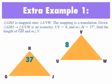This next example says triangle GHJ is mapped onto triangle UVW. When we say that GHJ is mapped onto, that means that we started with GHJ and we moved it to triangle UVW. The mapping is a translation. Given triangle GHJ is an isometry, UV equals 8, the measure of angle H equals 37 degrees, find the length of GH and the measure of angle V.